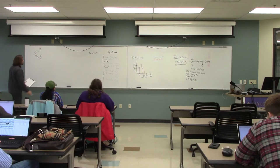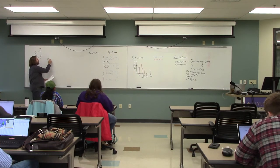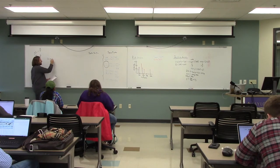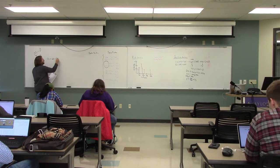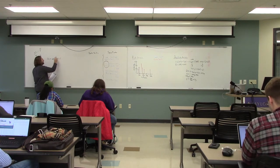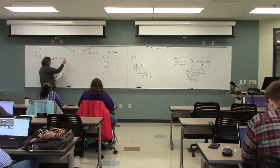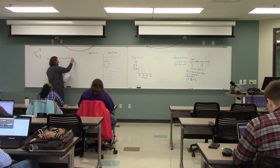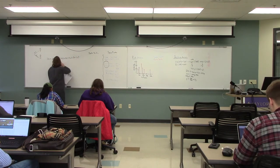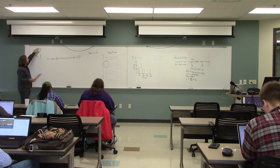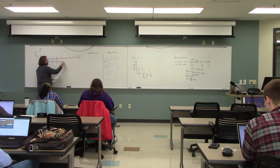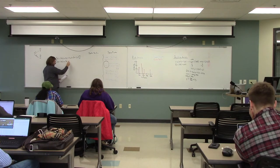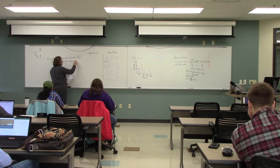I'm going to do the same computation for the expected value. Our expected value for this is going to be 60% times — and I'm not changing the probabilities — 30% of 4x plus 40% of 2x plus 30%. Plus 40% of a 50% probability that we'll get 8x plus a 30% probability that we'll get 4x plus a 20% probability that we'll get 2x.